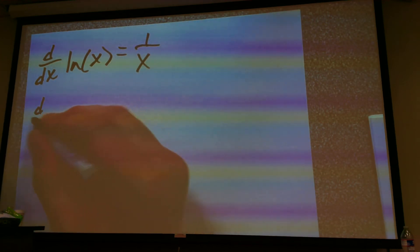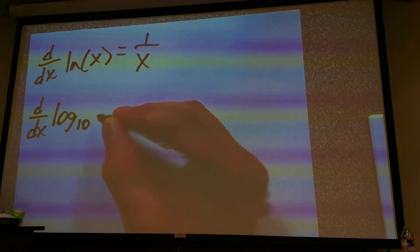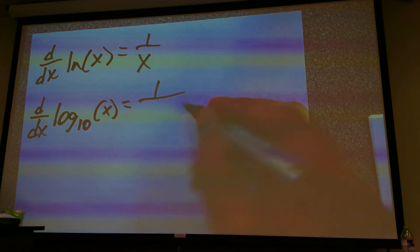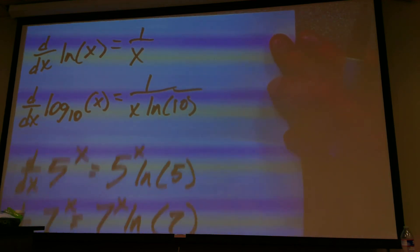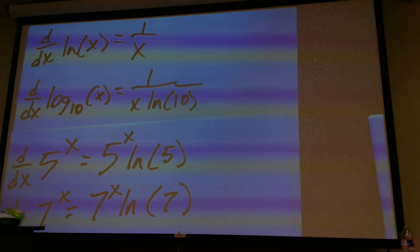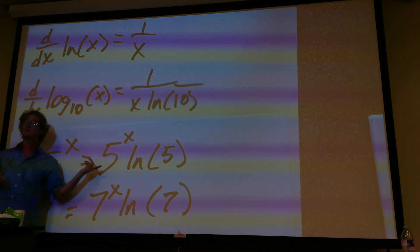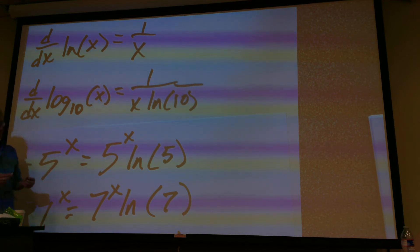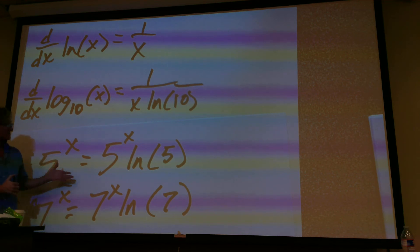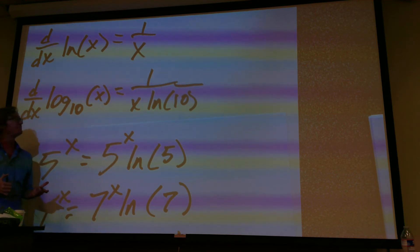If you have the derivative of other bases, say log base 10 of x, it's going to be 1 divided by x natural log of 10. So, that's similar in respect to these guys right here. But, instead of spitting a logarithm out to the front, and we'll prove this during the next lecture, just know that if you have other bases, whenever it's an exponential function, it's just a logarithm out to the front. Whenever you have your logarithm function, it's going to spit it down to the bottom.